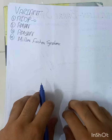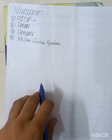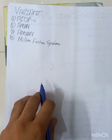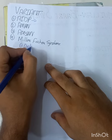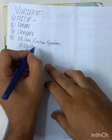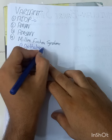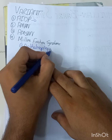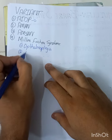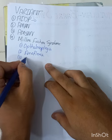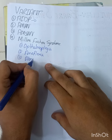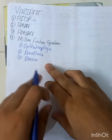Another variant is Miller Fisher Syndrome, which is a variant of Guillain-Barré syndrome involving the eyes, resulting in ophthalmoplegia. There can also be areflexia, and ataxia — the patient will report that they cannot walk properly.